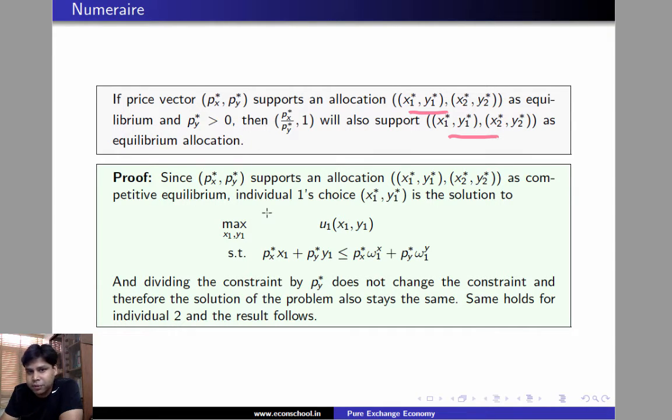The proof is again simple. Since PX star, PY star supports this allocation in competitive equilibrium, individual one's utility maximizing choice will be the solution to the following utility maximization problem. Now, dividing the entire constraint by PY star, we are going to replace this term by PX star by PY star. We'll replace this by 1, and we'll replace these by PX star by PY star and 1.